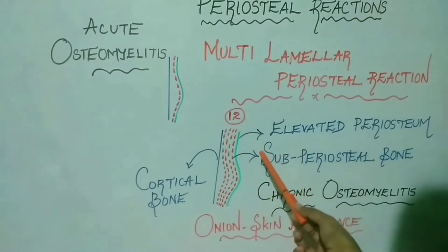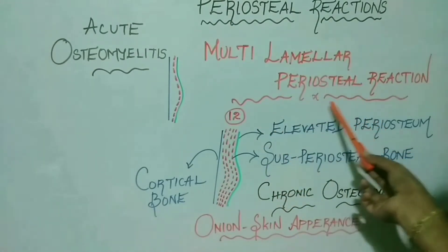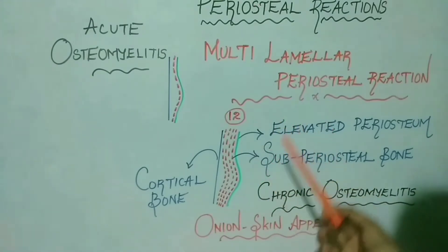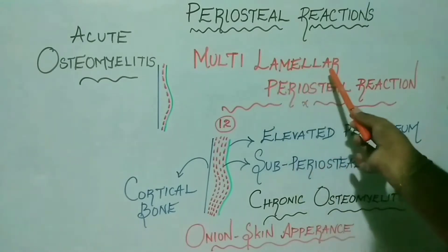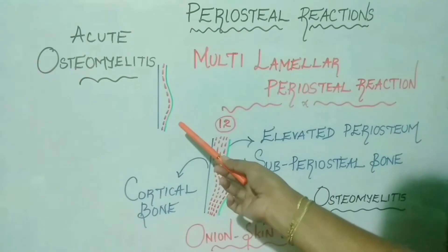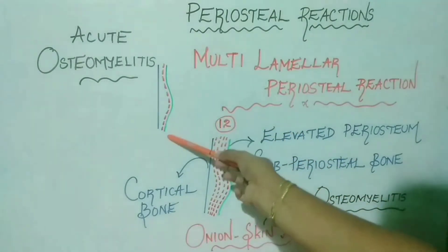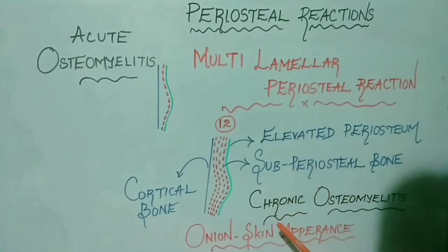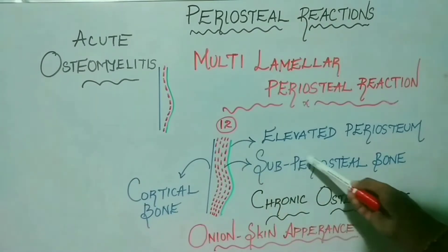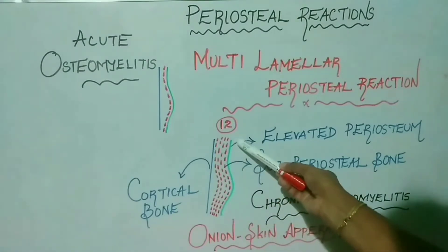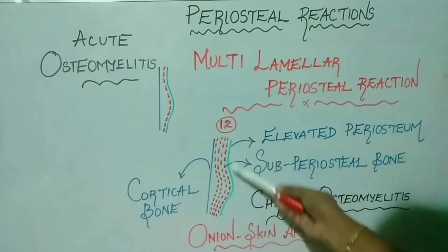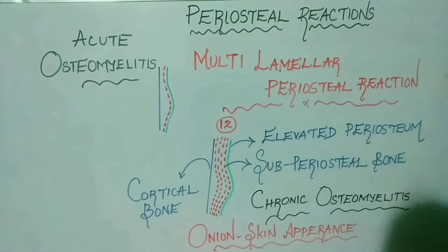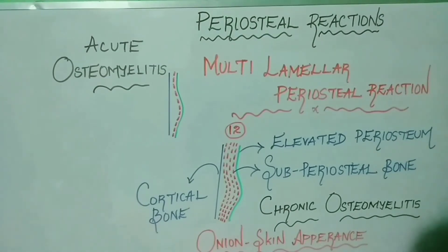In multi-lamellar periosteal reaction, multiple parallel layers of bone are deposited just beneath the periosteum. The number of layers may vary from several up to a maximum of about 12. This occurs as a result of acute periodic cyclic exacerbations of the underlying pathology after it enters a chronic phase. The best example is chronic osteomyelitis. Cyclic acute exacerbations produce more inflammatory exudate, repeatedly lifting the periosteum and stimulating additional bone layers, resulting in the characteristic onion skin appearance.